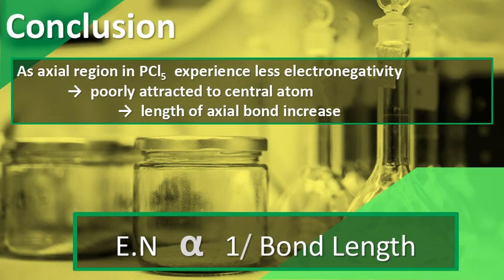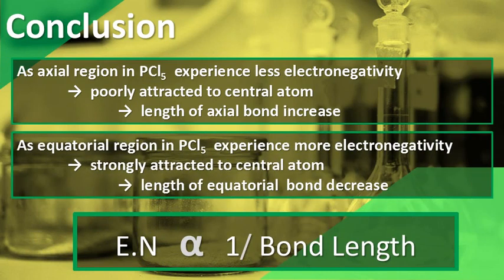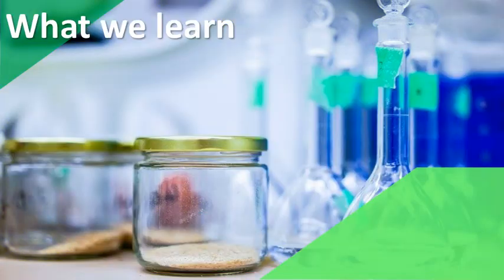As the axial region in PCl-5 experiences less electronegativity, axial electrons are less attracted to the central atom, and hence the length of the axial bond increases. Similarly, the equatorial region in PCl-5 experiences more electronegativity, so equatorial electrons are strongly attracted to the central atom, and hence the length of the equatorial bond decreases.